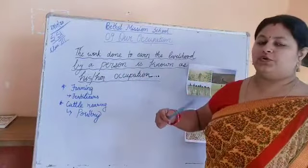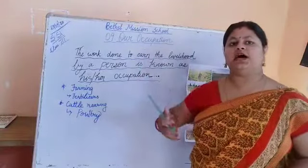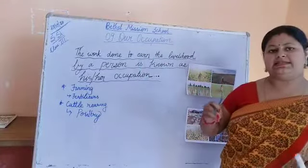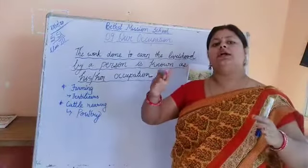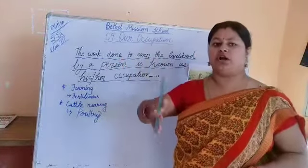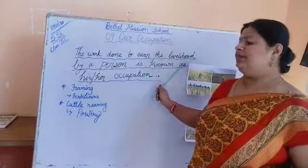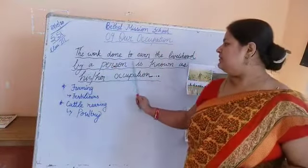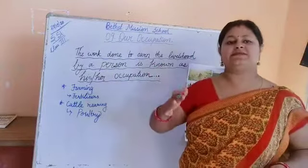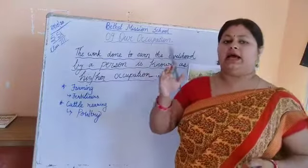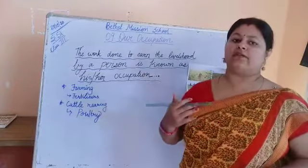First we will know what is occupation. The work we do to earn some amount of money is the occupation. The work done to earn money is your occupation. The work done to earn the livelihood by a person is known as his or her occupation. Occupation keeps us occupied and provides the source of income.